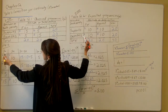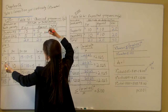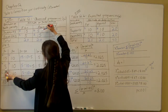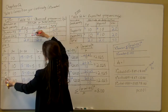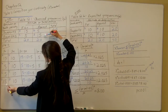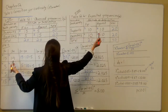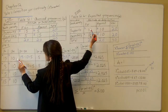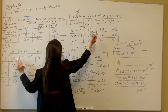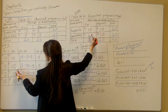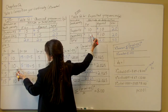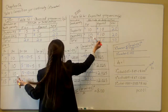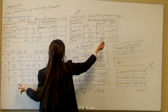For the observed frequencies, working down the column: A is 15, B is 5, C is 5, and D is 15. Now over to the expected frequencies, which is the next column to the right: A is 10, B is 10, C is 10, and D is 10. Don't get tripped up — all the expected frequency numbers are the same here, but that's why I'm going to talk you through it.